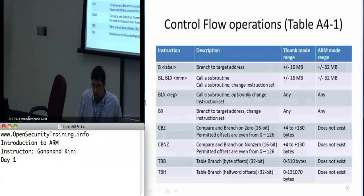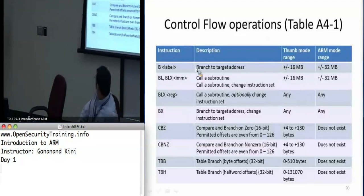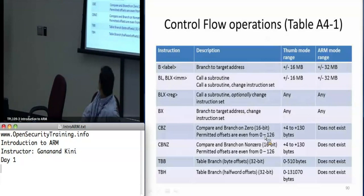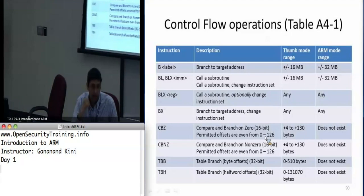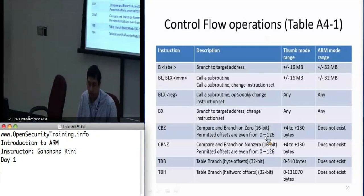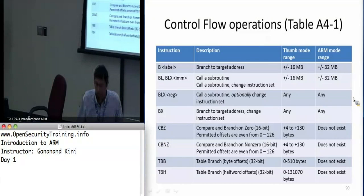Back to control flow: we saw how branch operates — if you say branch to a label, it stores the address of that target label into PC and then branches. BL, BLX do an additional operation where they save the program counter into the link register before doing the branch. CBZ and CBNZ are used for conditional operations.